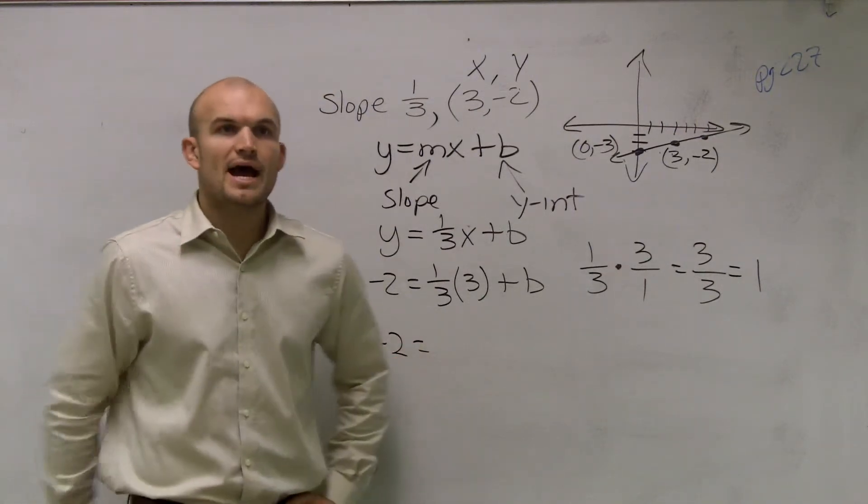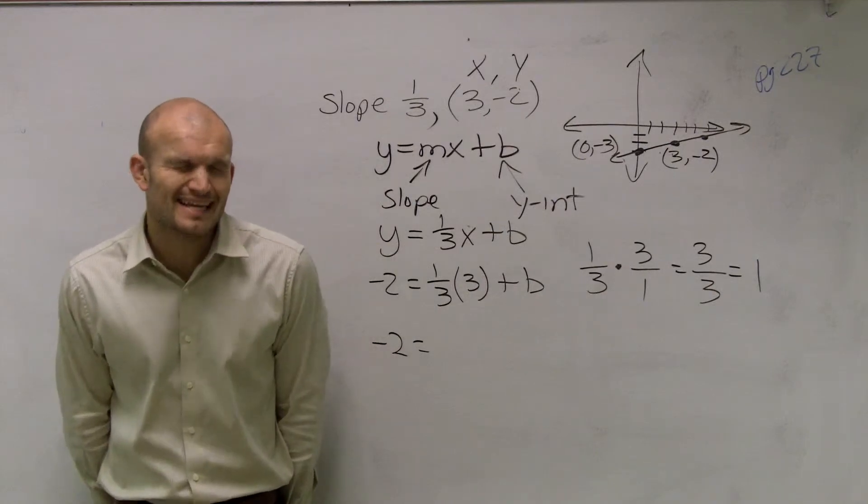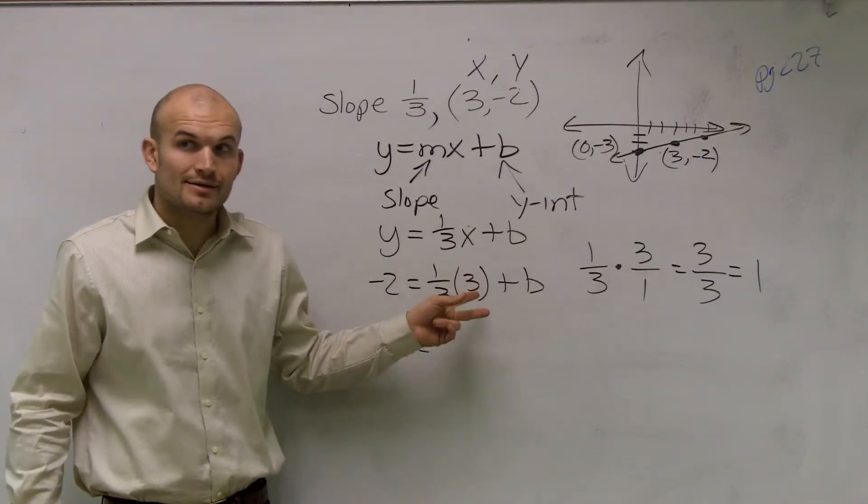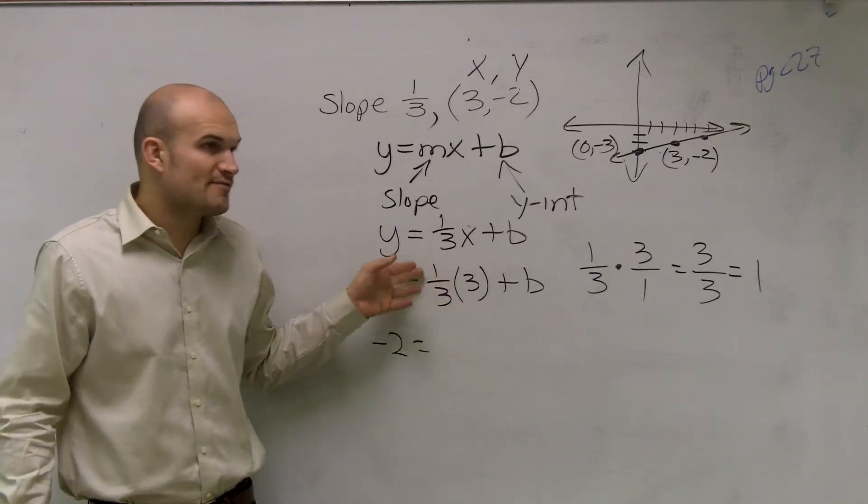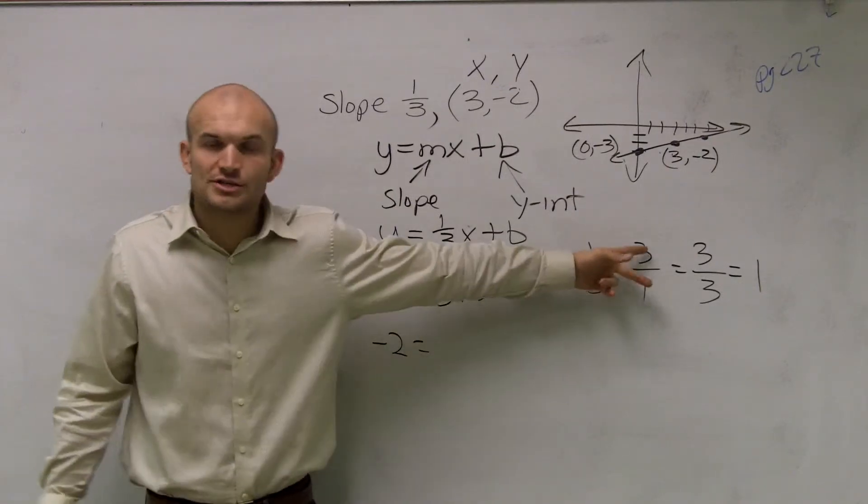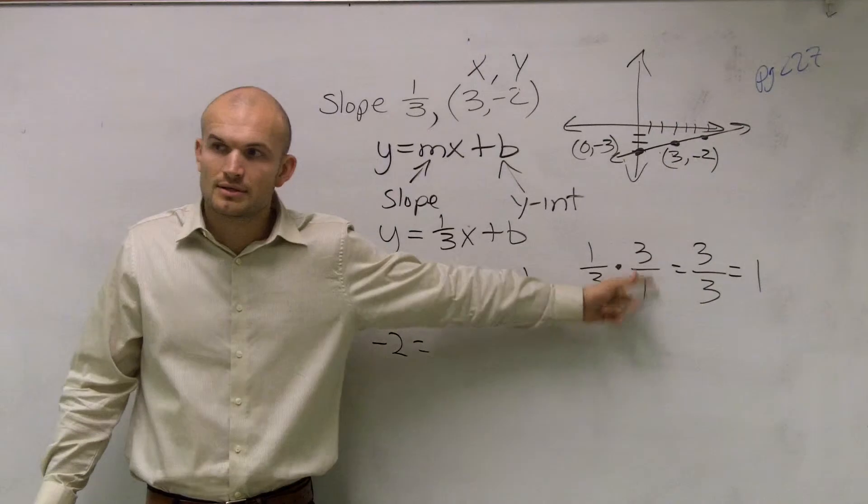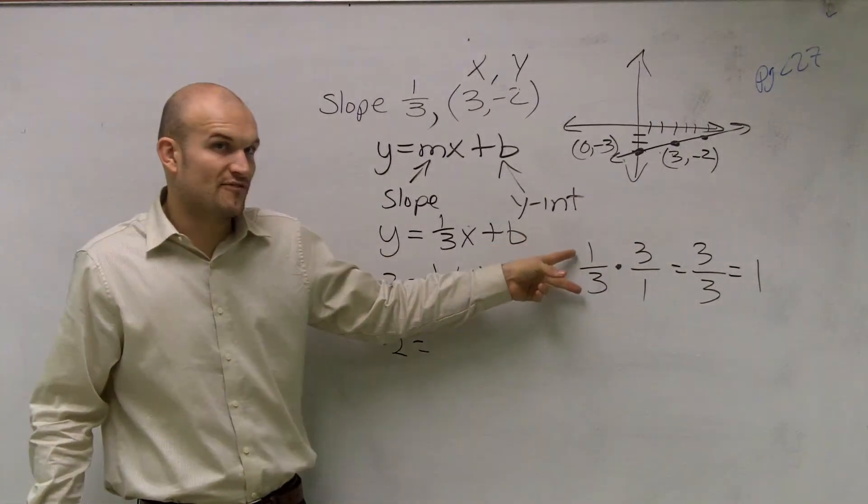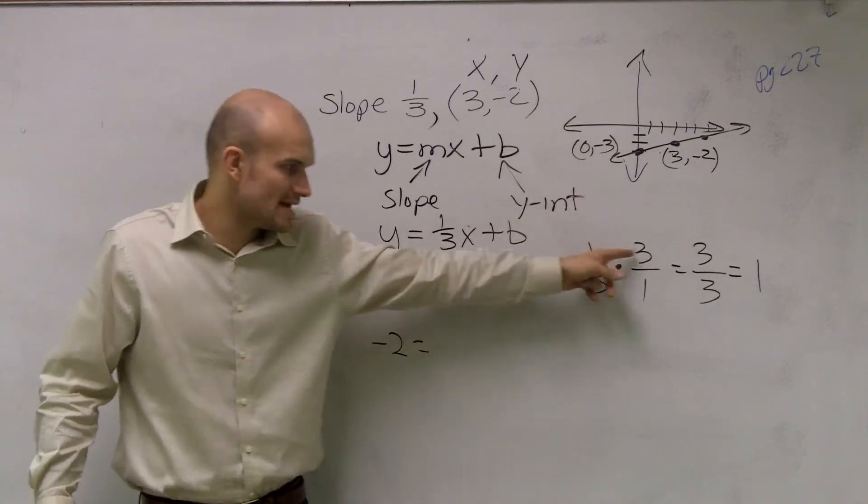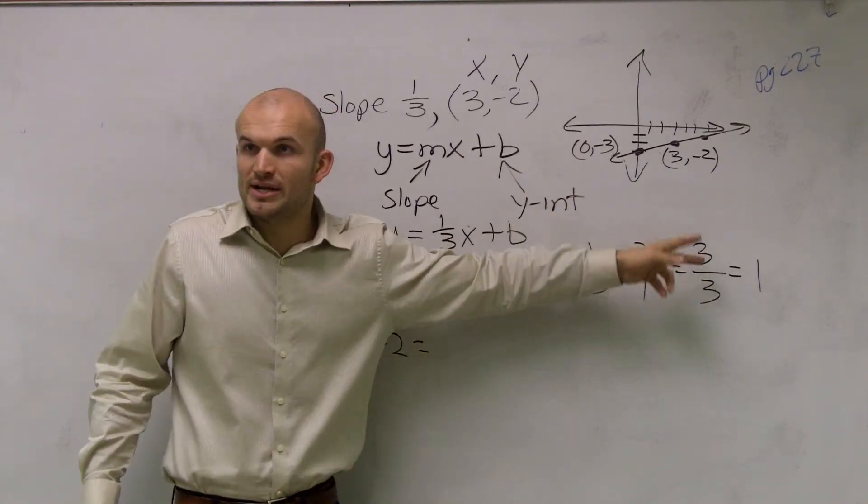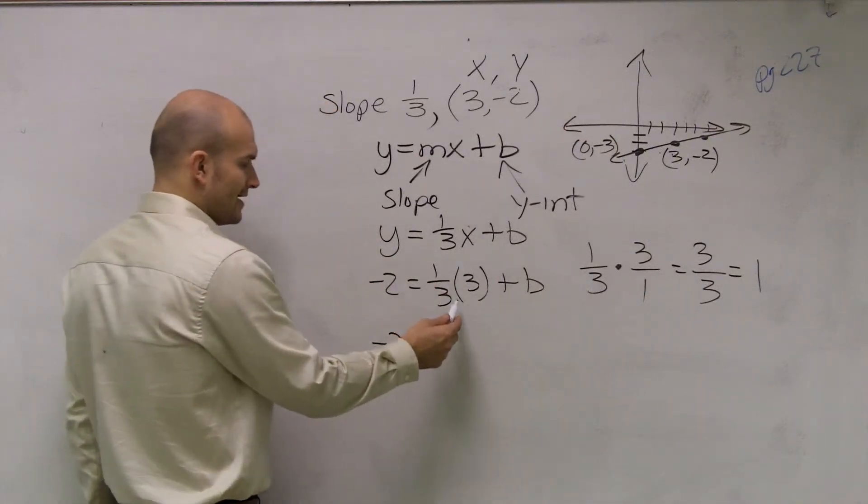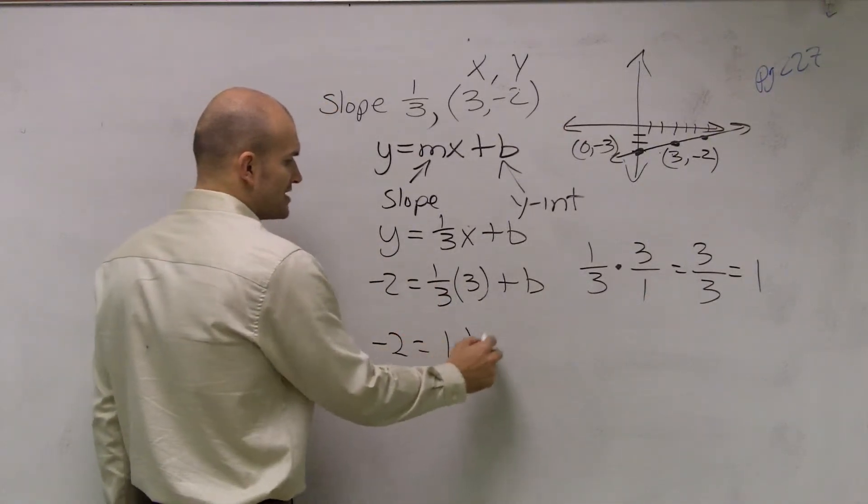So now, the dilemma that a lot of you came up with: if you have one-third times 3, how do you write a fraction times a whole number? You change your whole number to a fraction, because 3 divided by 1 is still 3. When you multiply fractions, you multiply across. 1 times 3 is 3, 3 times 1 is 3, 3 divided by 3 is 1. So therefore, what I get here is -2 equals 1 plus b.